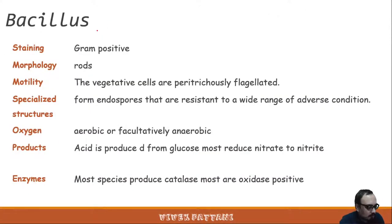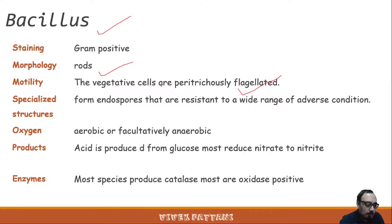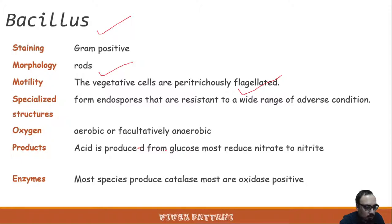The first species of this aerobic group is Bacillus. It is one of the most studied species among gram-positive bacteria. The rod-shaped vegetative cells are peritrichously flagellated and form endospores resistant to a wide range of adverse conditions. They may be aerobic or facultatively anaerobic. Acid is produced from glucose, most reduce nitrate to nitrites, most species produce catalase, and most are oxidase positive.